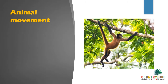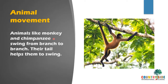Can you see in the picture what the animal is doing? Animals like monkey and chimpanzee swing from branch to branch. They swing from one branch to another, and their tail helps them to swing.